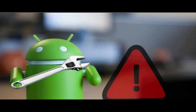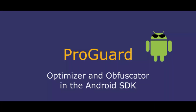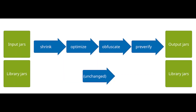ProGuard is the tool that comes with the Android SDK, which is used to shrink, optimize, and obfuscate the code for an Android app. ProGuard rules are configuration settings that are used to customize how ProGuard operates on an Android app's code.